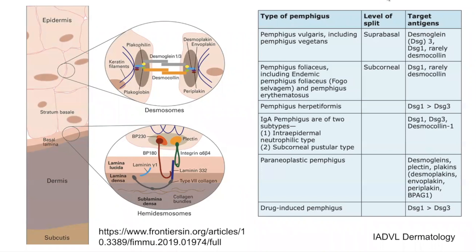It is Desmoglein 1 and 3 which are the targets involved in Pemphigus vulgaris as well as Pemphigus foliaceus. Pemphigus vulgaris predominantly affects Desmoglein 3, which is present towards the middle and lower half of the upper epidermis, whereas Pemphigus foliaceus tends to affect Desmoglein 1, found in the upper layer of the epidermis, and hence the split with Pemphigus foliaceus tends to be subcorneal.